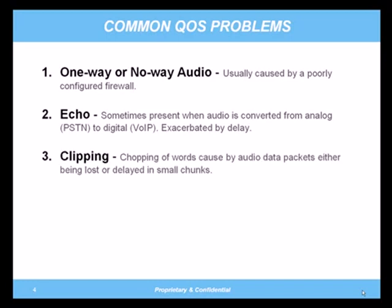Clipping is a loss of parts of words usually caused by packet delay or packet loss — choppy words caused by packet delay. If a packet of voice is delayed too long, it is basically the same thing as losing the packet completely, because you are not going to want to play that audio clip later out of order. This is typically caused by packet loss or delay, so look at your internet connectivity or routing on your local network.